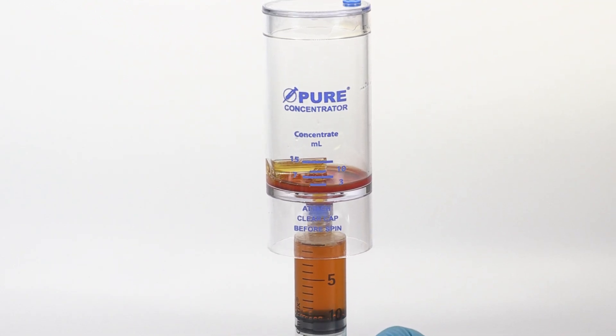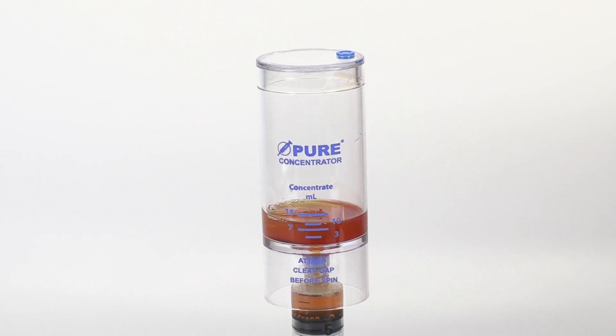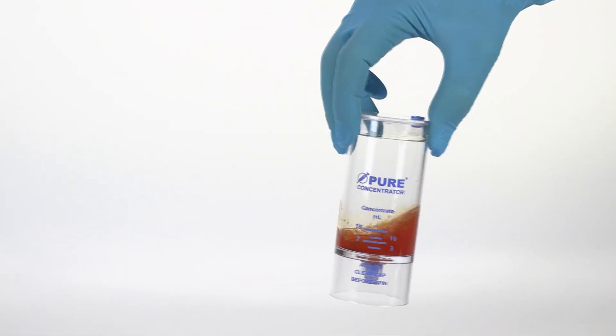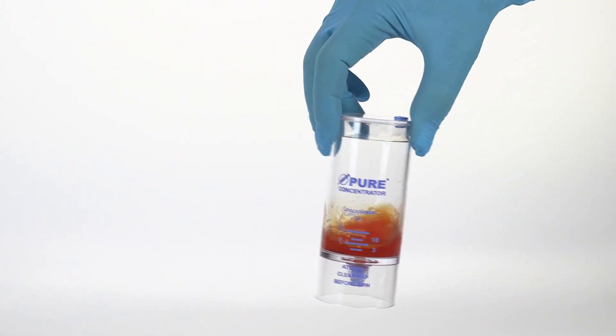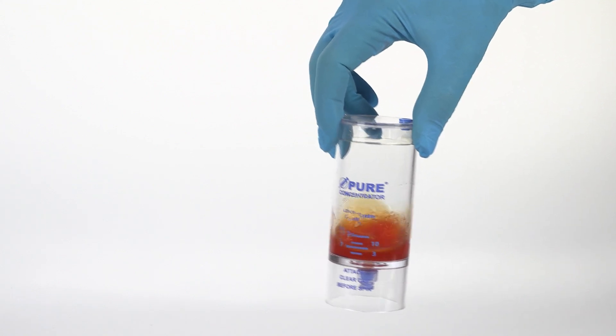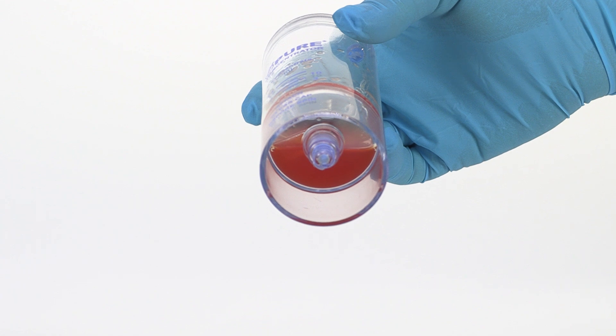Then inject the plasma concentrate into the concentrator device. Re-suspend the platelet buffy coat back into the plasma concentrate by rocking and swirling the device back and forth. Do this until all of the platelets have been re-suspended into the solution and is no longer visible at the bottom of the device.